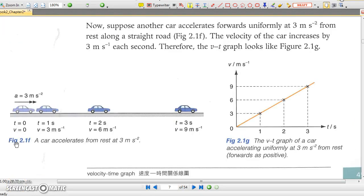Velocity time graphs. In figure 2.1f, a car accelerates from rest at 3 m/s², so that its velocity increases by 3 meters per second per second. From the velocity time graph on the right,